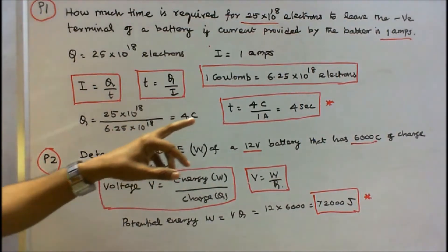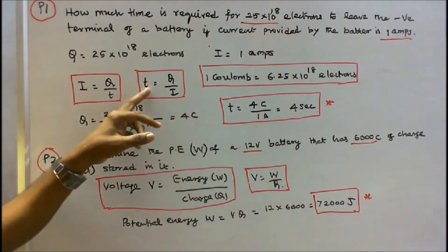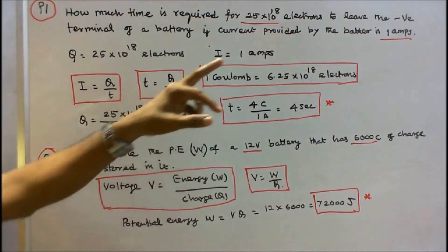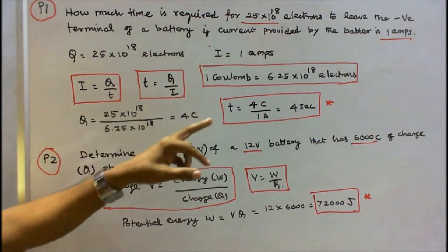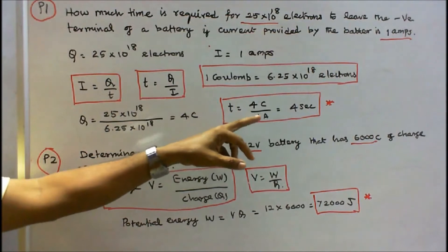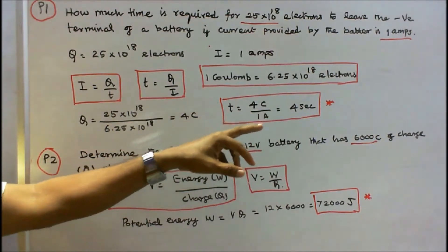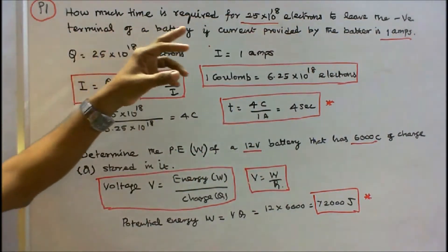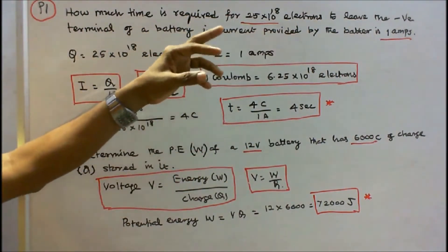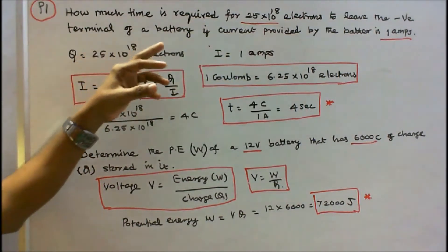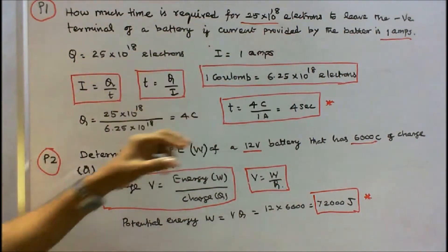Therefore, t = q/i = 4 coulombs divided by 1 amp = 4 seconds. The time required for 25 × 10^18 electrons to leave the negative terminal of the battery is 4 seconds.